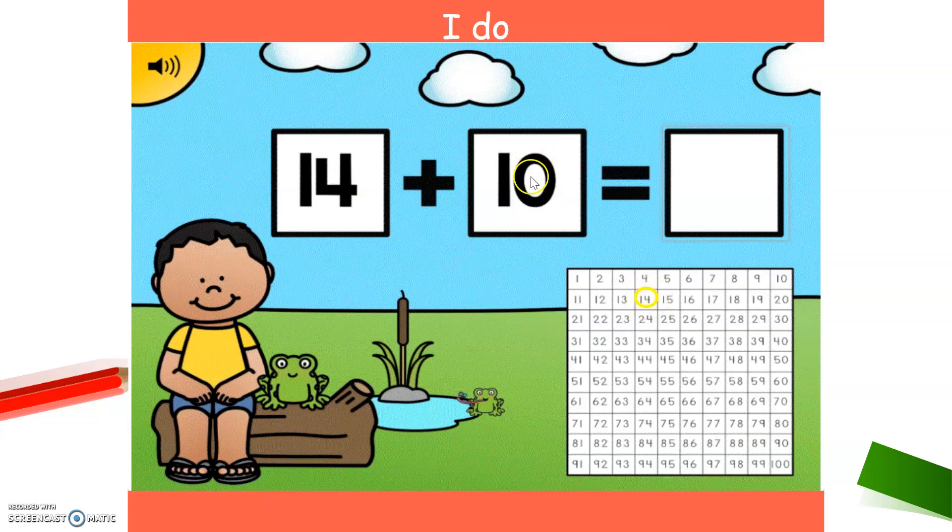Now because I'm adding 10, I can do it two ways. I can count one at a time until I get to 10 or I can just go down because I know that every time I go down that's a whole group of 10. So if I go like this, that's 10 more. And I can verify that by counting one at a time. So there's 1, 2, 3, 4, 5, 6, 7, 8, 9, 10.